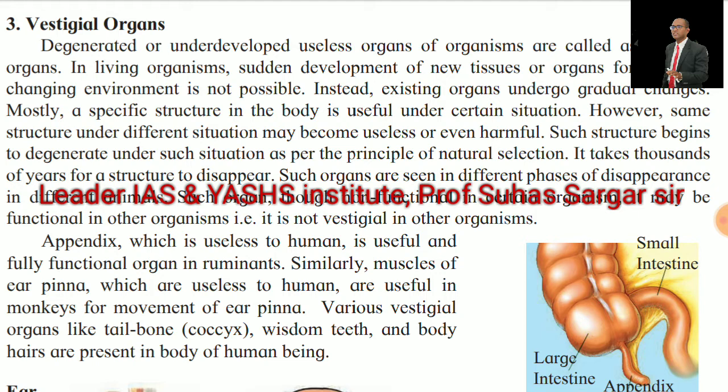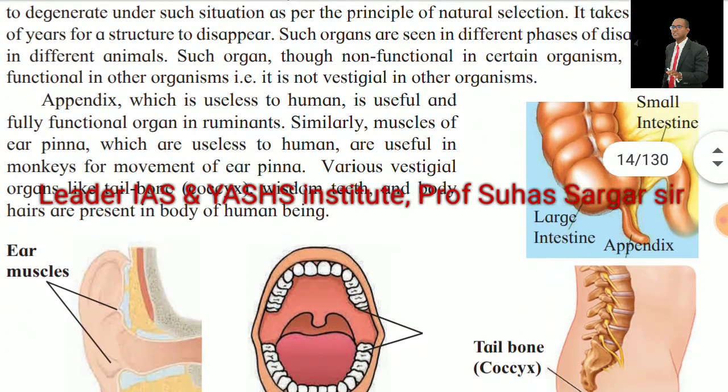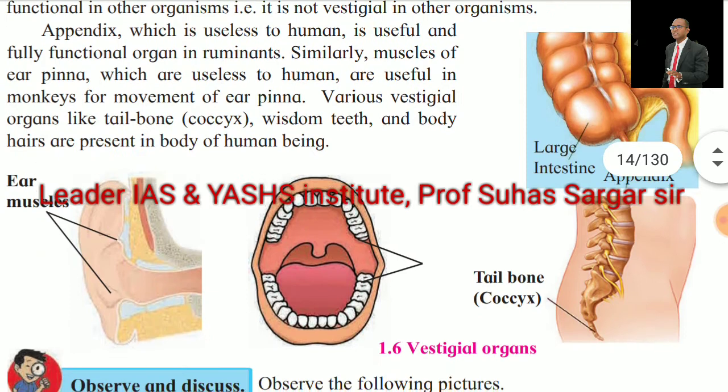Similarly, the muscles of the ear pinna, which are useless to humans, are useful in monkeys for movement of the ear pinna. The various vestigial organs like the tailbone, wisdom teeth, and body hairs are present in the body of human beings. See the pictures of vestigial organs in humans.